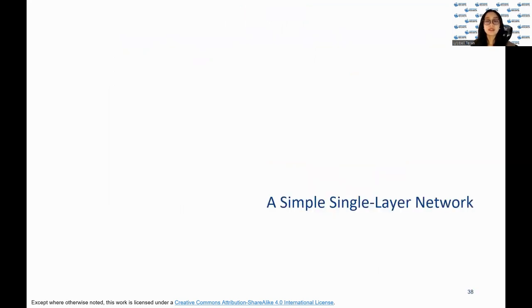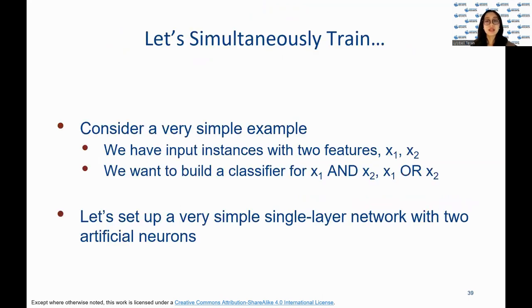We will now discuss the concept of neural networks with a more detailed example of a simple neural network layer. This slide serves as a simple example of a single layer network, demonstrating how it can be used to simultaneously train multiple classifiers. The example considers input instances with two features, x1 and x2. The goal is to build a classifier for x1 AND x2, as well as a classifier for x1 OR x2. A simple single layer network with two artificial neurons is set up for this purpose.